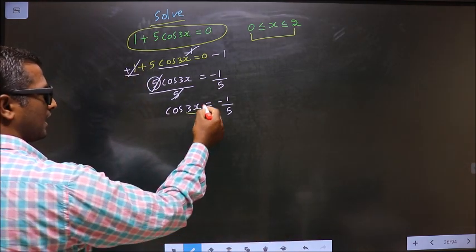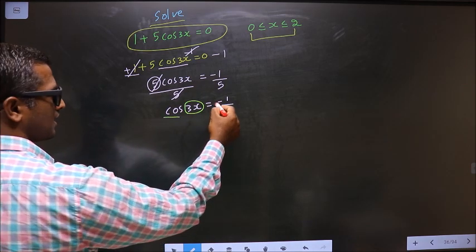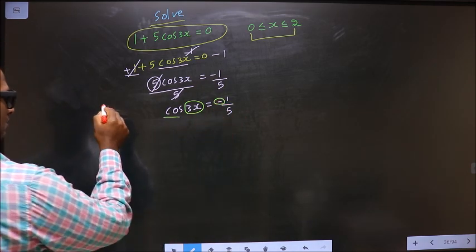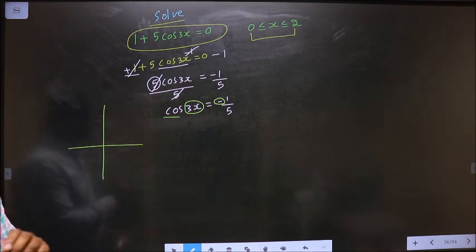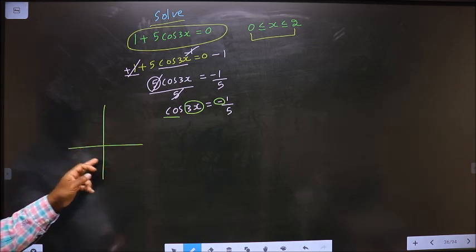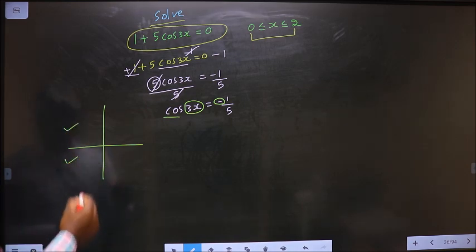Now to get the values for 3x. Here it is cos and here it is negative, so now you should check in what all quadrants is cos negative. It is all silver teacups. So cos is negative in the second and in the third.